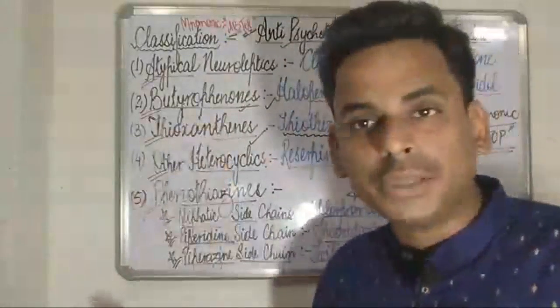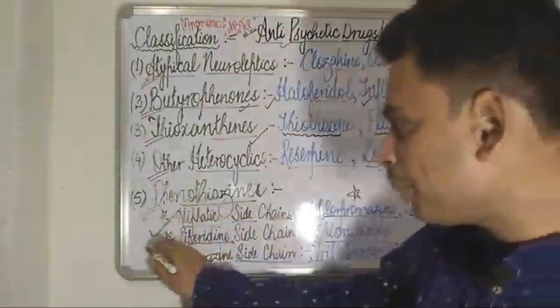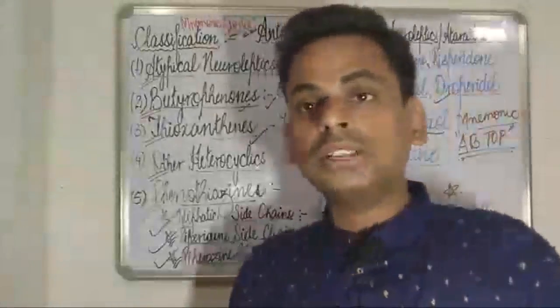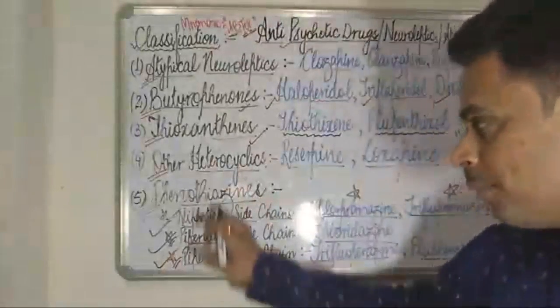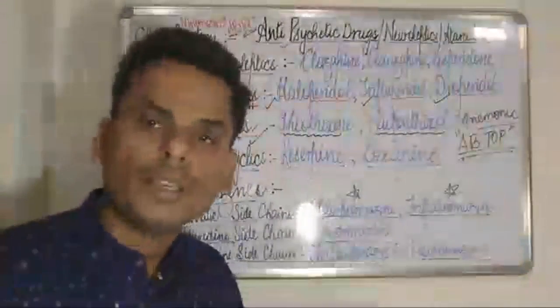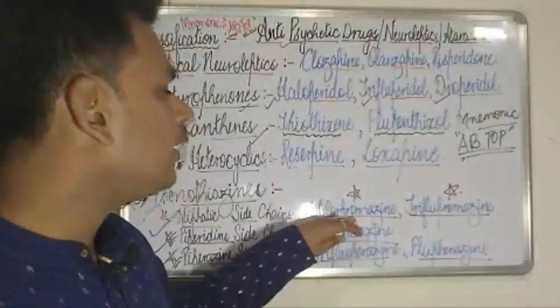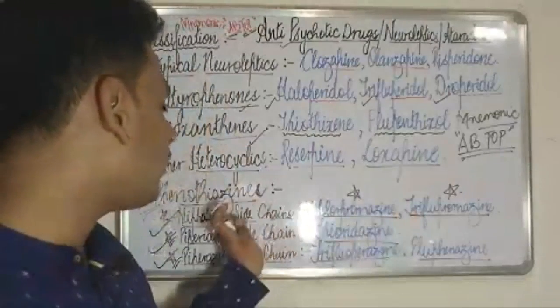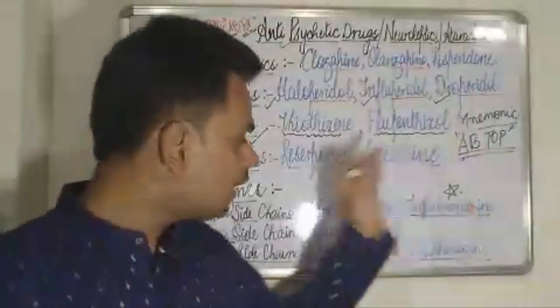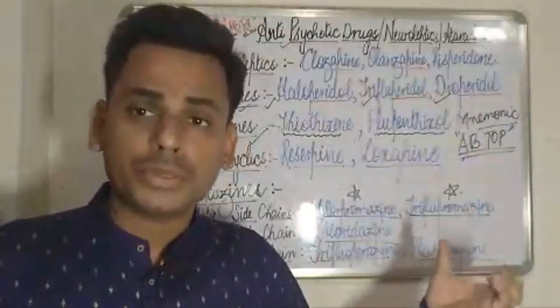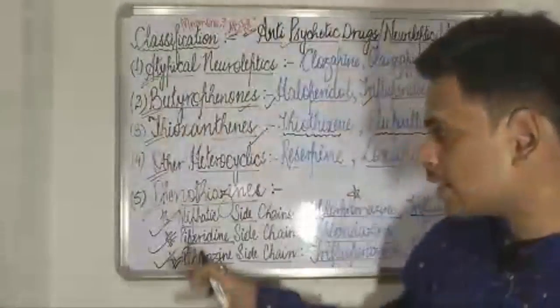Moving on to the last but very important class — the phenothiazines. The phenothiazines have been subdivided into three broad categories depending on their side chains: aliphatic side chains, piperidine side chains, and piperazine side chains. The most commonly used drug in the treatment of schizophrenia, under the aliphatic subclass, is chlorpromazine and triflupromazine — chlorpromazine being the drug of choice for schizophrenia.